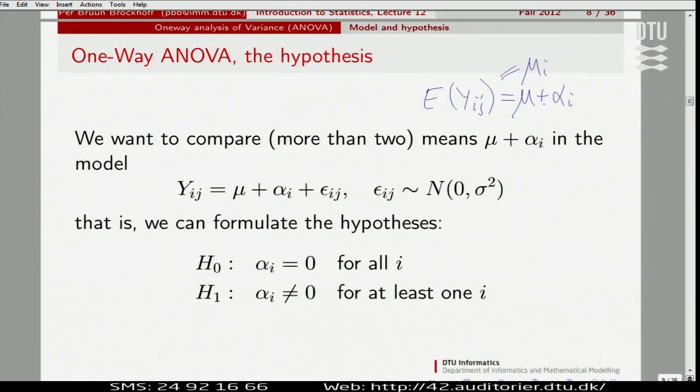Or you can have an overall mu, I'm just saying, and then the individual contributions which then add up to zero. That's the two different ways of talking about this. Both are valid. I'll focus on this one, but you may meet the other one also.